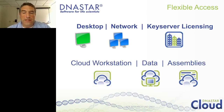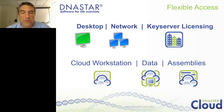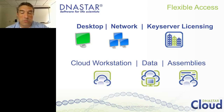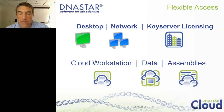Our software also has flexible access. We give you different options for where and how you can run the software — from software that runs on a desktop computer, to network licensing, to key server licensing, so you can install the software on multiple computers and share licenses. We also have cloud workstations. You can run assemblies on the Amazon hardware. If you are constrained with the hardware that you have, these are great options.